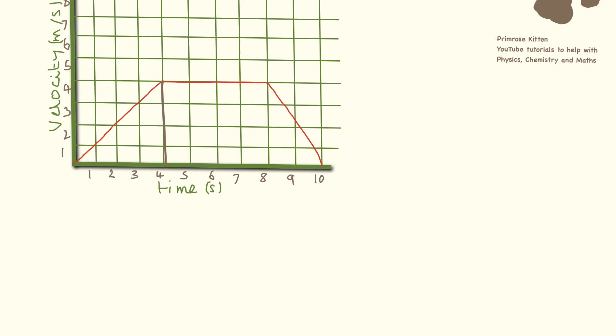Part B is slightly different because it is a rectangle. So it is just base times height. Our rectangle is 1, 2, 3, 4, and our height is 1, 2, 3, 4. So that is going to equal 16 metres.